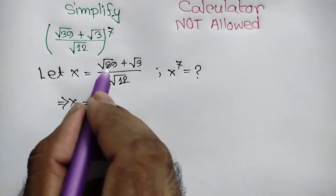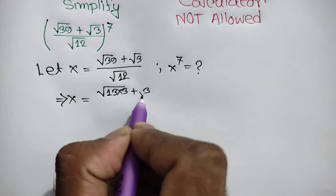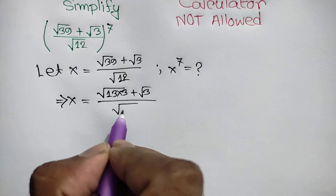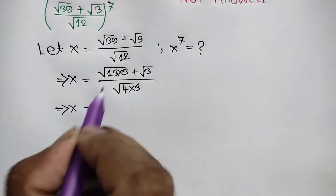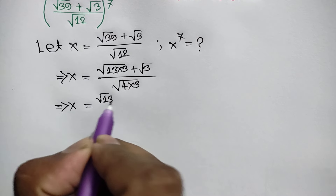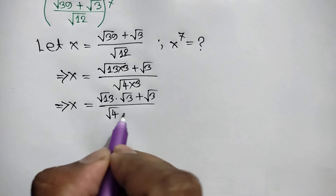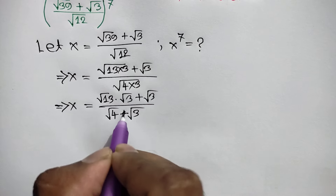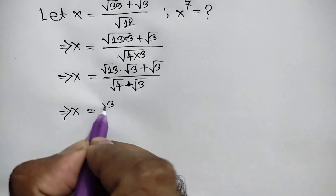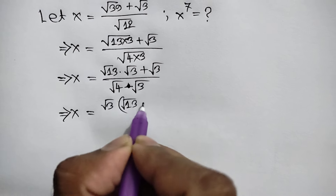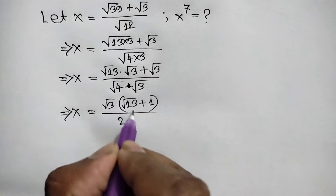x equals square root of 39, which can be written as 13 times 3, plus square root of 3, over square root of 12 which can be written as square root of 4 times 3. So x equals square root of 13 times square root of 3, plus square root of 3, over square root of 4 times square root of 3. Taking out common factor square root of 3, we get square root of 3 times (square root of 13 plus 1), over 2 times square root of 3.